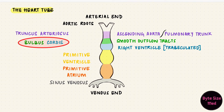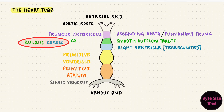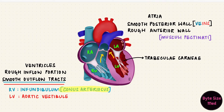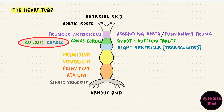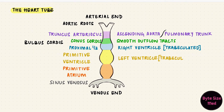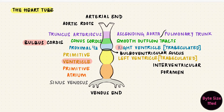The bulbus cordis actually has three parts: a distal third, a middle third, and a proximal third. The distal third is the truncus arteriosus. The middle third is also called the conus cordis — and if you remember that the smooth outflow tract of the right ventricle is also called the conus arteriosus, you'll remember that the outflow tracts of both ventricles come from the conus cordis. The proximal third forms the trabeculated part of the right ventricle. The trabeculated part of the left ventricle is formed from the primitive ventricle. Between the bulbus cordis and the primitive ventricle is a bulboventricular sulcus — the site of the interventricular foramen, between the developing right and left ventricles, and where the interventricular septum will eventually form.